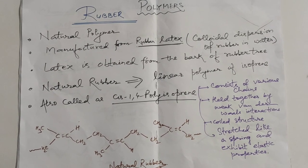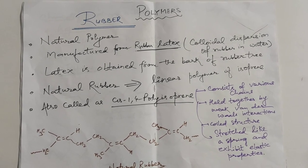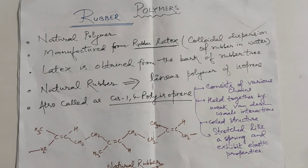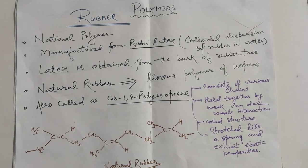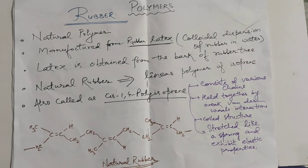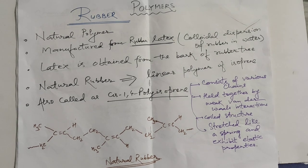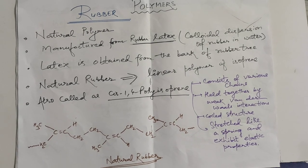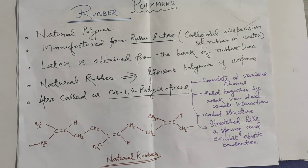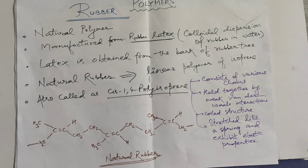Rubber is a natural polymer and it is manufactured from rubber latex. The latex is actually a colloidal dispersion of rubber in water. This latex is obtained from the bark of the rubber tree. Natural rubber is a linear polymer of isoprene consisting of various chains held together by weak van der Waals forces. They have a coiled structure and can be stretched like a spring, giving them elastic properties.